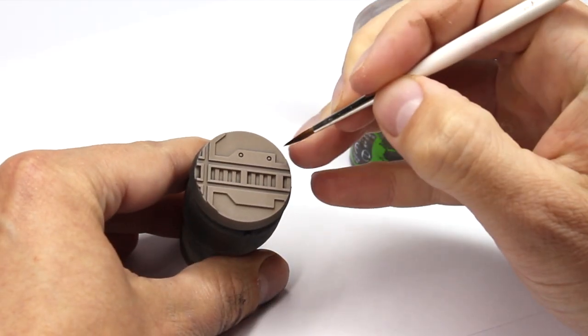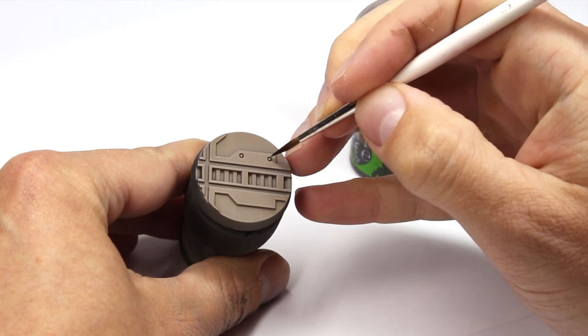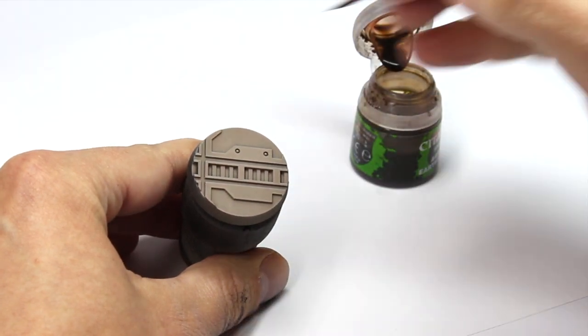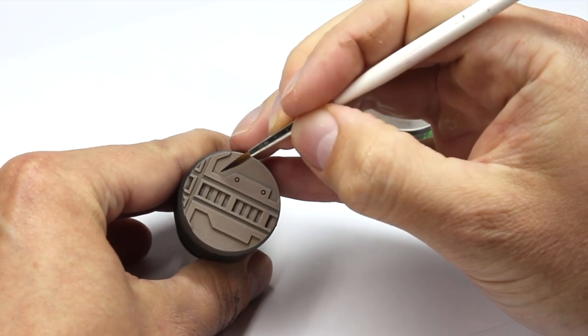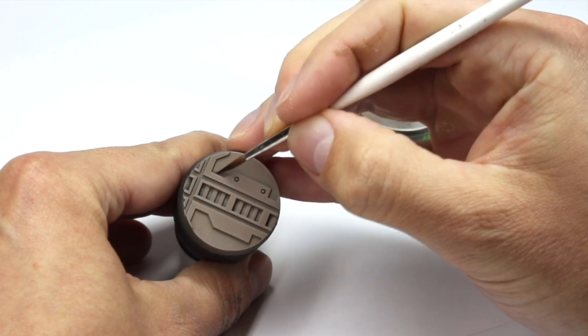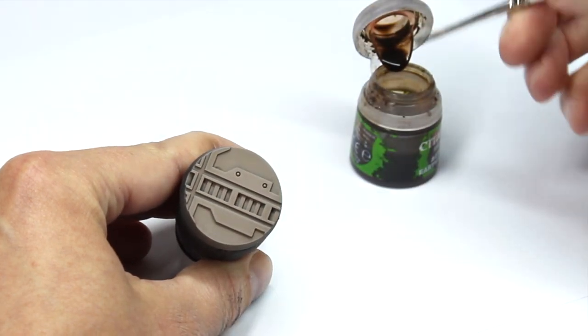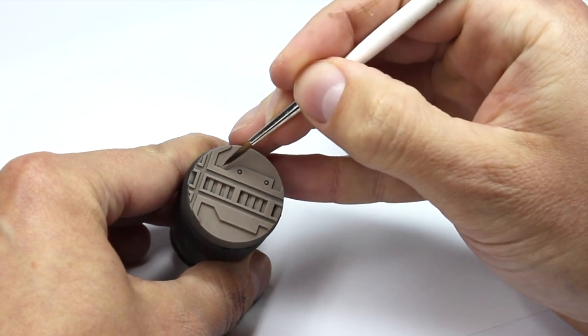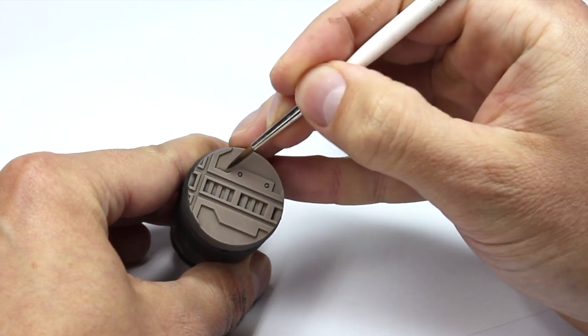You can see that when we try to apply this to the model, the paint stays exactly where we put it. So if we want to fill in the details, we have to trace the entire way along them. And if any of the liquid touches either side of the crack we're trying to paint, it stays there and stains the surface.